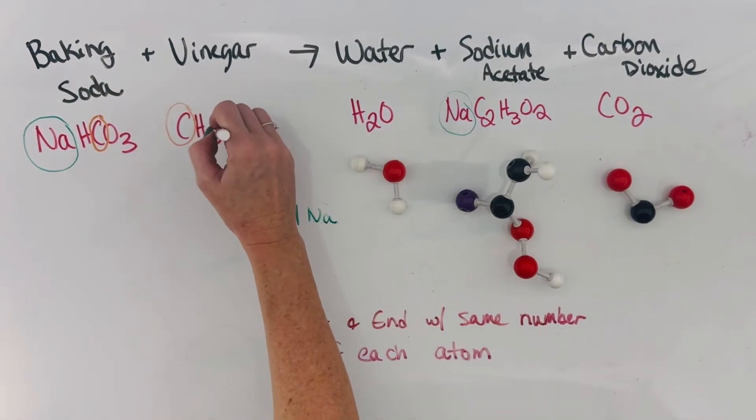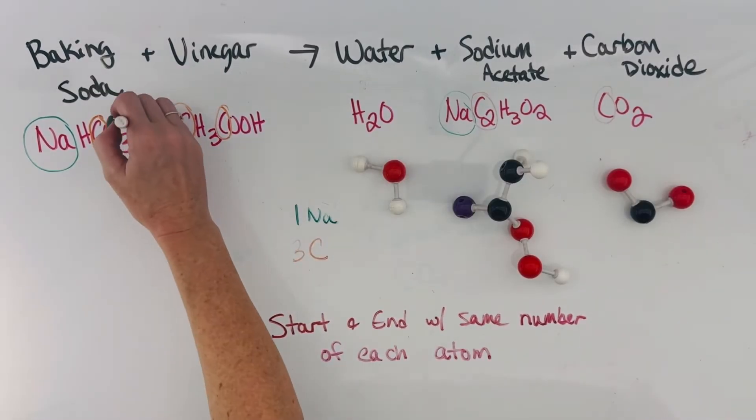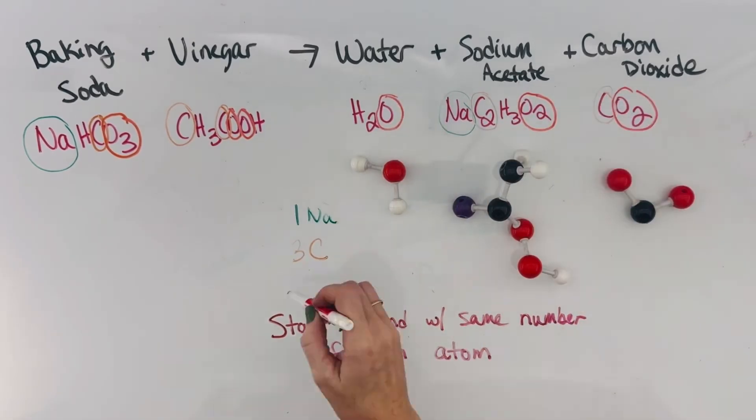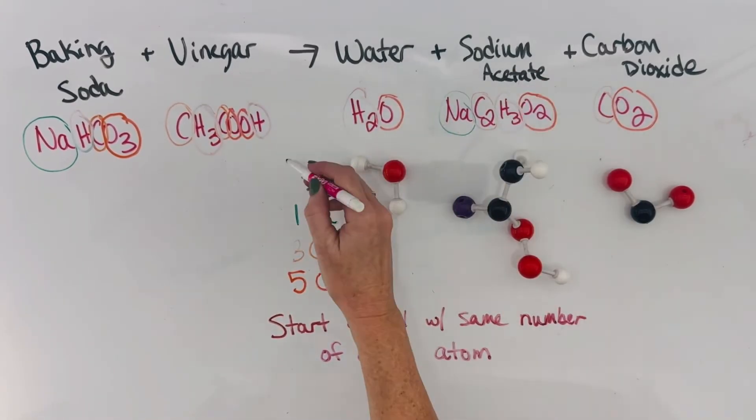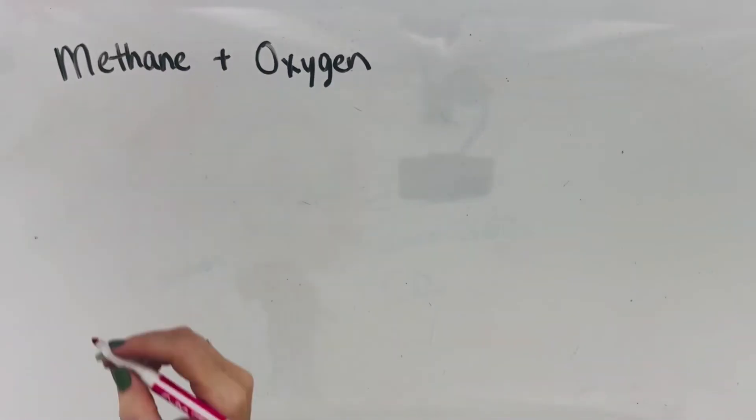So we start and end with one sodium, which is great, and three carbons before and after. Before and after, we have five oxygens and we also have five hydrogens. And so when we write this equation out, we know that we're starting and ending with all the same number of each atom, so our equation's good.